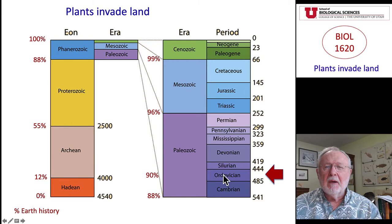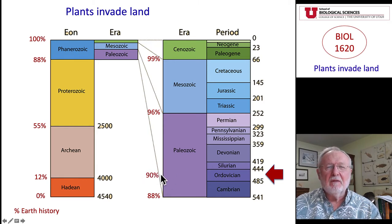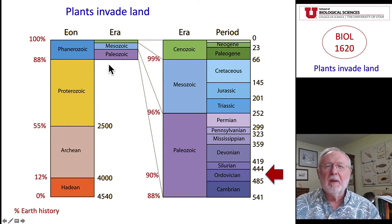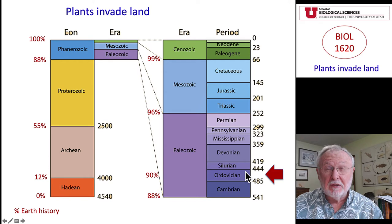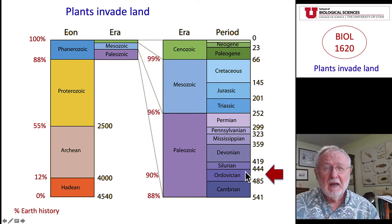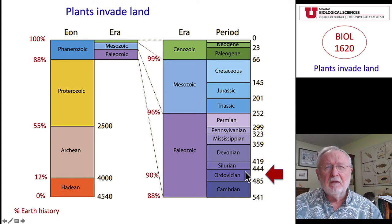By this time, we've already gone through 90% of the history of planet Earth, with much of it being the period of the microbes. And now we're going to begin to get into the period in which plant evolution takes place, and eventually plants begin to invade land and to dominate.